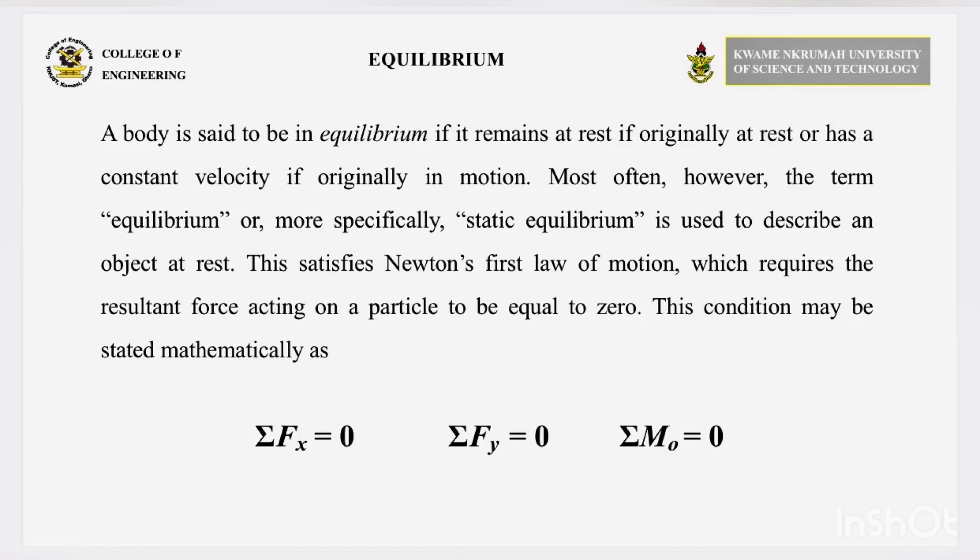According to Newton's first law of motion, if the system of forces acting on a body has zero resultant, the body will remain at rest or move in a straight line with constant velocity. This explains that a body is said to be in equilibrium if it remains at rest, if originally at rest, or has a constant velocity if originally in motion.